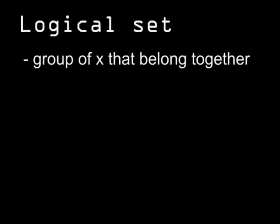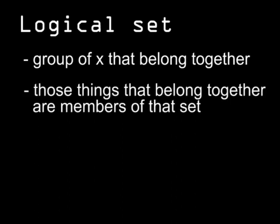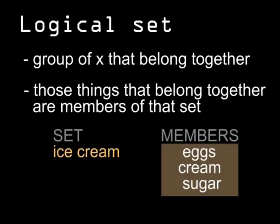On to the new stuff. I mentioned the domain of discourse when talking about variables — it's the set of all things a variable could represent. That brings up two concepts we haven't covered yet: a set and members of a set. In logic, a set is just a grouping of things that belong together. There's a set of colors of paint, a set of ingredients in ice cream, a set of people whose company you enjoy. Those things within a set are its members. Members of the set of ingredients in ice cream include eggs, cream, and sugar.